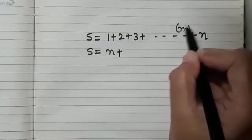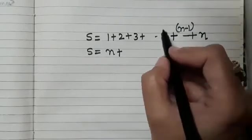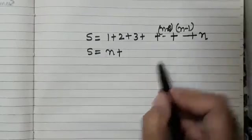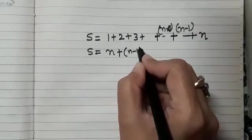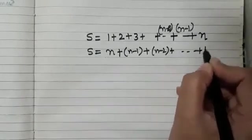Yes, it will be n minus 1. And what will be the term previous to n minus 1? Yes, it will be n minus 2. Very good. So I can write here n plus n minus 1 plus n minus 2 up to 1.